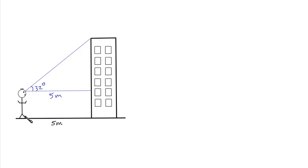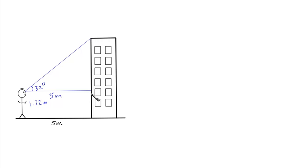We'd also need to know the height of the surveyor. An average person, about 6 foot, would be about 1.72 metres. So what we need to do is work out this length here, and then add it to the 1.72 metres — the height of the surveyor — and that will give us the total height of the tower.